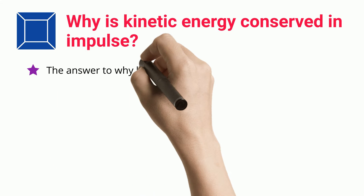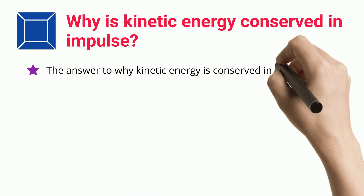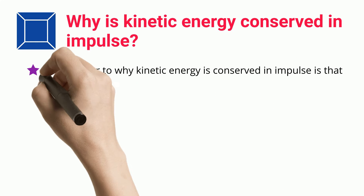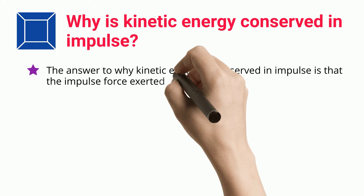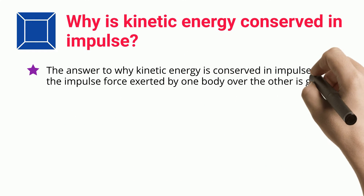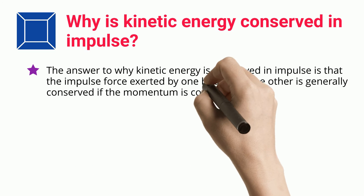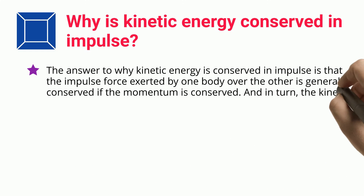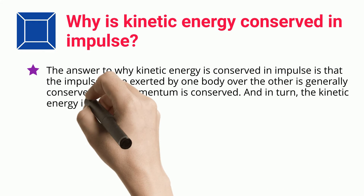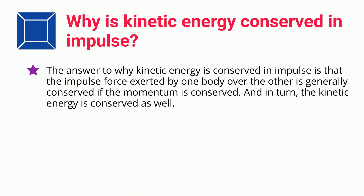The answer to why kinetic energy is conserved in impulse is that the impulse force exerted by one body over the other is generally conserved if the momentum is conserved. And in turn, the kinetic energy is conserved as well.